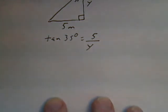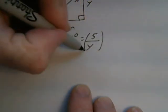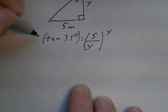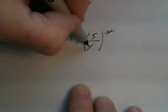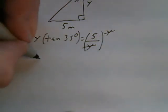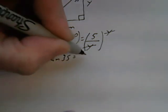So, just like we did in the previous example, to get rid of what's on the bottom, I multiply both sides by that value. So I'm going to multiply this by Y, and I'm going to multiply that by Y. These guys cancel out because it's the top and bottom, so I'm left with Y tan 35 equals 5.